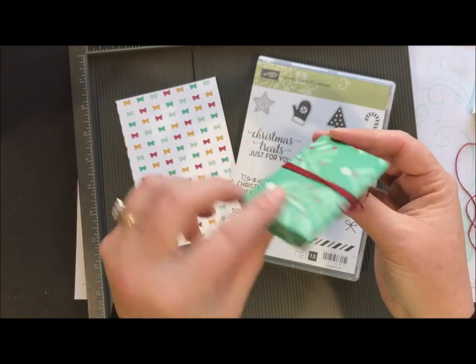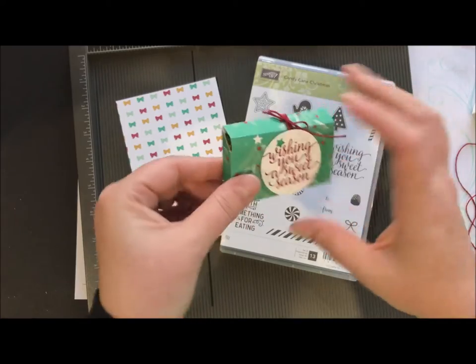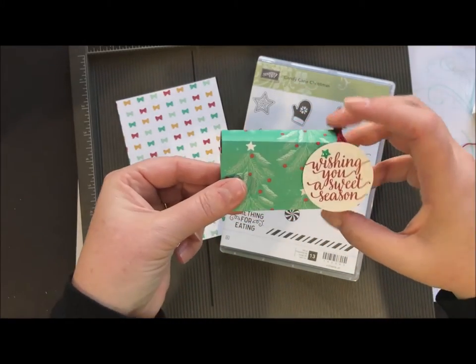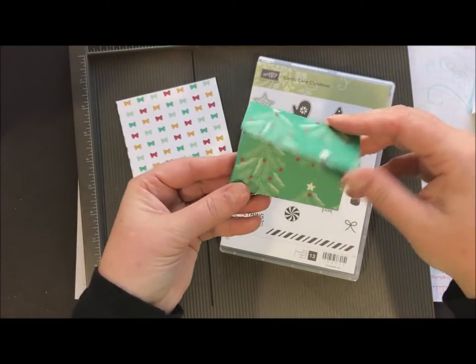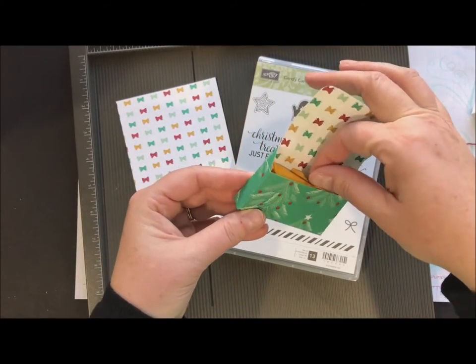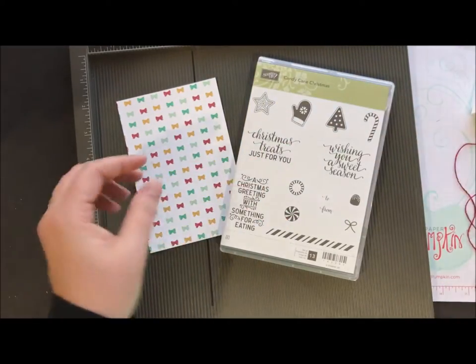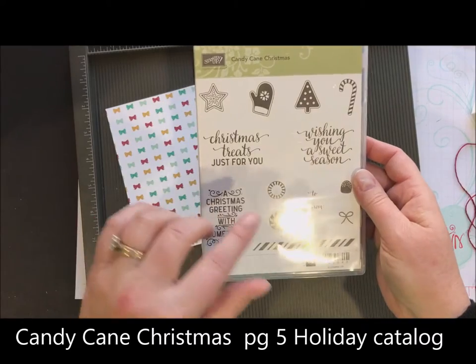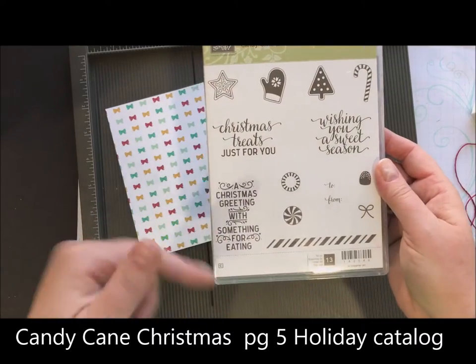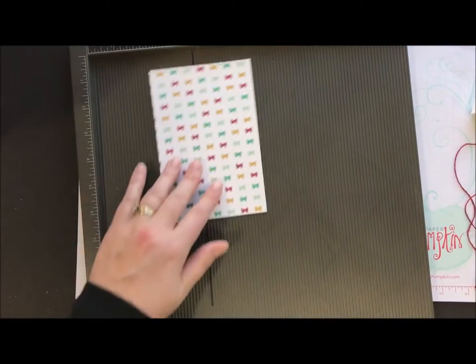So it's just a tiny little treat box made out of our presents and pine cones paper. And when you pull off the little belly band string, inside you have little baby Ghirardelli. So let me show you how to make this. We are going to use our Candy King Christmas stamp set and this is a great one because it goes well with gift giving, especially if you're giving food type things.